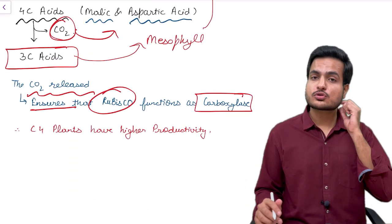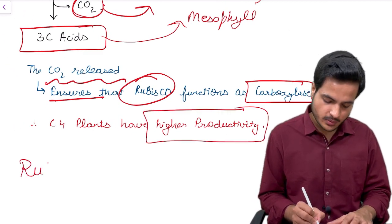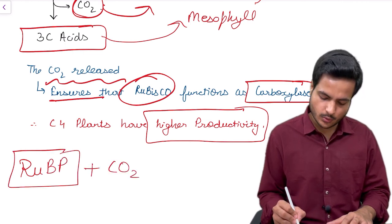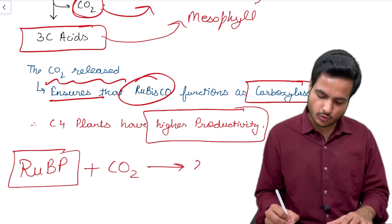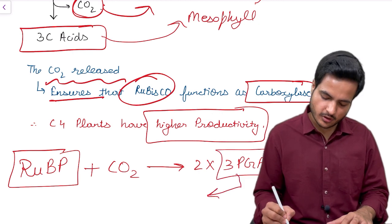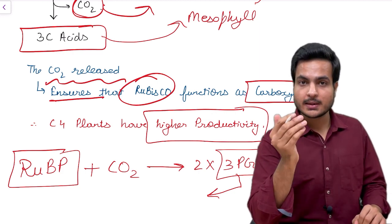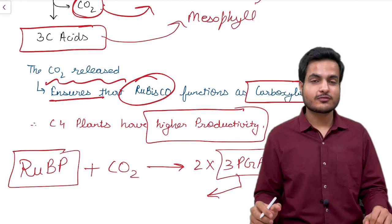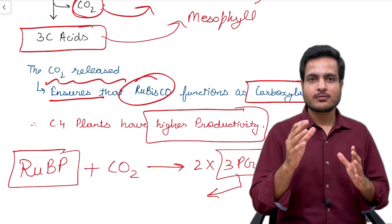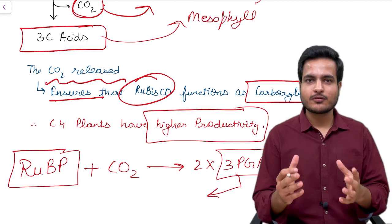When RuBisCO functions like a carboxylase there is higher productivity, because RuBP (the 5-carbon keto sugar) binds with CO2 only, leading to the formation of two molecules of 3-phosphoglyceric acid, along with energy currency synthesis. Carbon dioxide is not released and glucose is formed. Therefore, C4 plants are more efficient by taking a longer loop to enter the Calvin cycle, whereas C3 plants use a shortcut leading to the wasteful process of photorespiration.